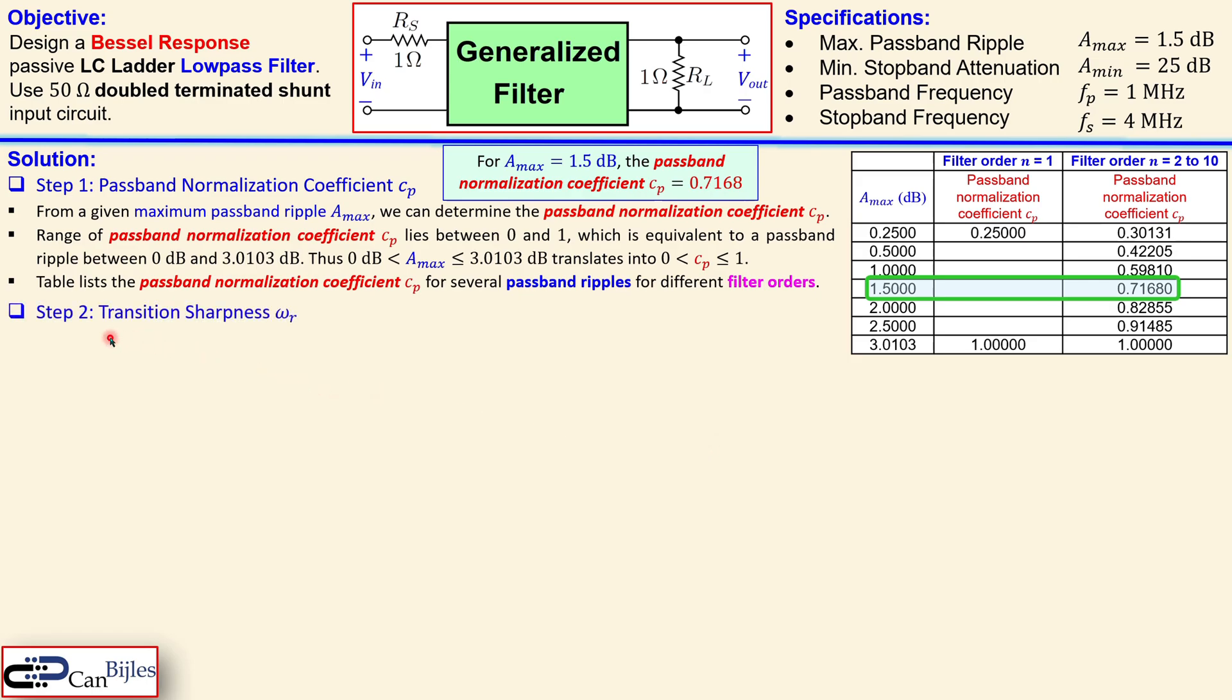Next step is the transition sharpness which is given by omega_r and that is the ratio between the stopband frequency and the passband frequency. It is given here in radians per second but you can relate it to fs and fp in this format so that is actually 4 MHz over 1 MHz which is just 4. Then step 3 is we need to normalize this transition sharpness and we give it by omega_r prime and that is just this value we have found in step 2 multiplied by the CP. That's the reason for the CP. So omega_r times CP will be then omega_r prime so 4 times 0.7168 that will give us 2.8672 and this is an important number we'll use shortly.